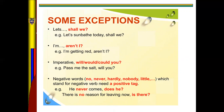The second exception: with 'to be' when you say 'I am', the question tag is 'aren't I?' For example, 'I am getting ready, aren't I?' In imperative — for example, 'Pass me the salt, will you?' With negative words like 'no', 'never', 'hardly', 'nothing', 'nobody', you use a positive or affirmative tag. For example, 'He never comes, does he?' or 'There is no reason for living now, is there?'